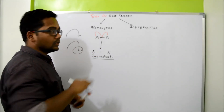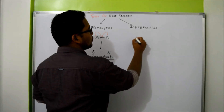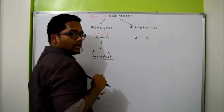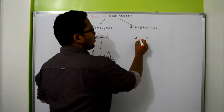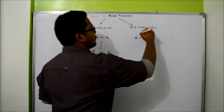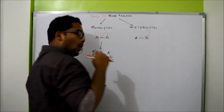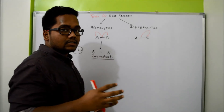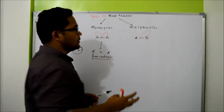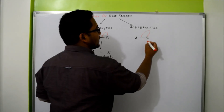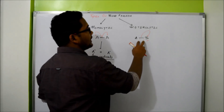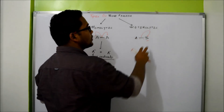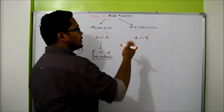Now in heterolytic bond fission, suppose you are having two atoms A and B bonded to each other by a covalent bond, so there are two electrons. In heterolytic bond fission, one of the atoms takes both the electrons. This mainly depends on the electronegativity of the atom. If atom B is more electronegative than A and you break the bond between A and B, then it will break in favour of atom B.